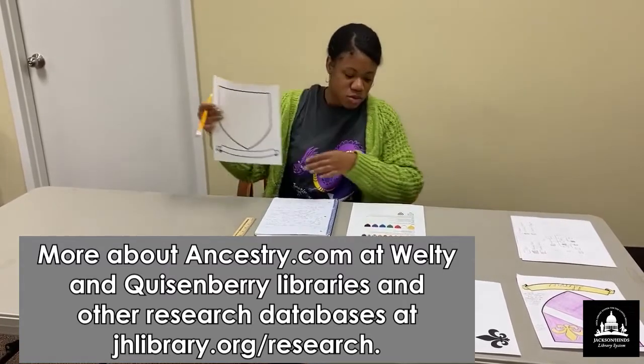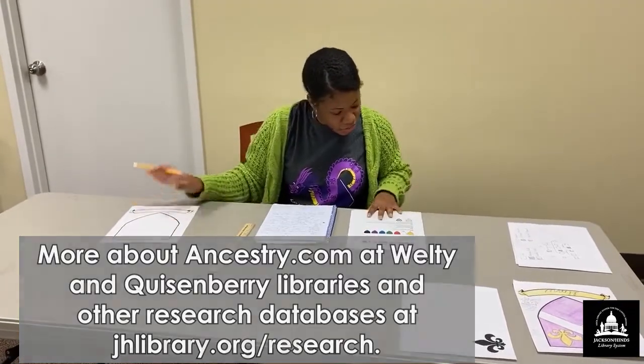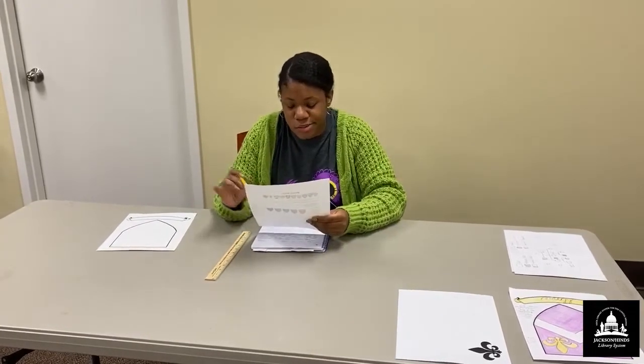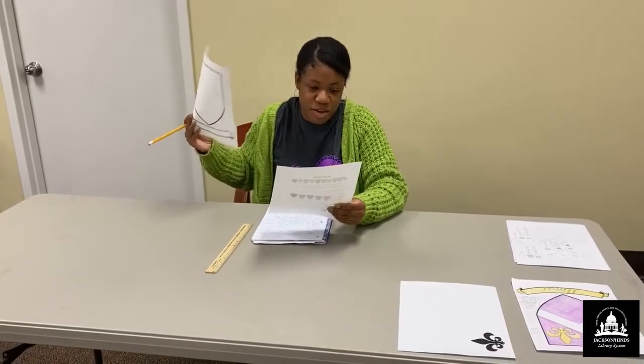you can always go to Walter Planning Library, and we have Ancestry.com there. Okay? So since we got a discussion, let's go over some things that we need to divide within our family crest.